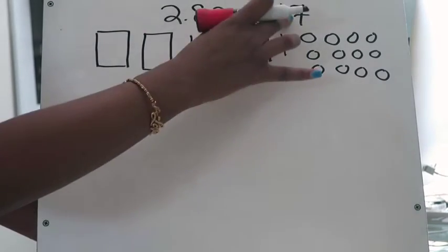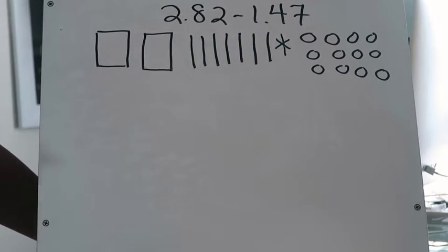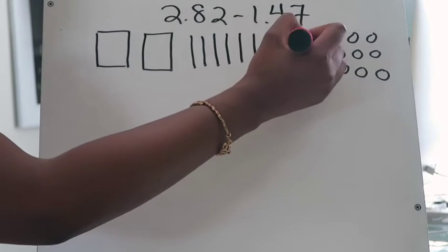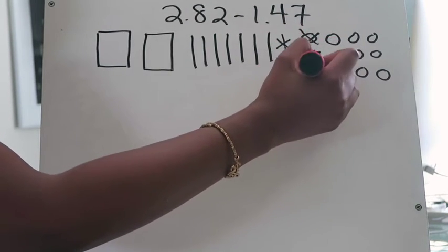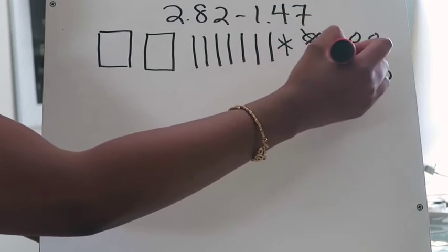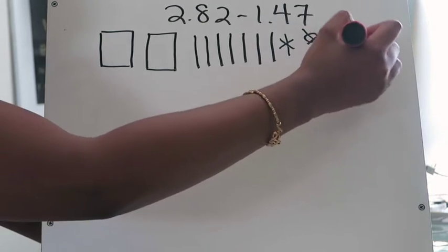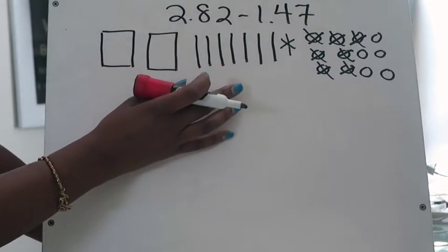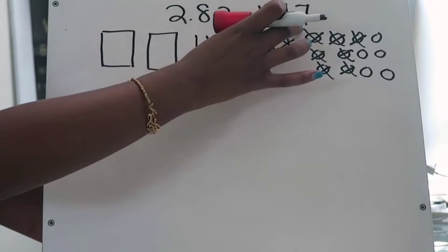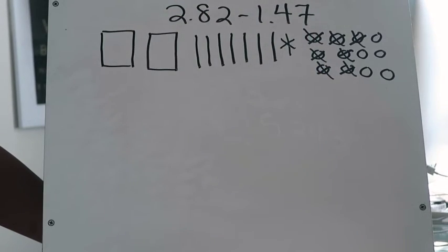Now I can subtract seven hundredths, so I'm going to cross those out — one, two, three, four, five, six, seven. I am now done subtracting the seven hundredths that is in the decimal one and forty-seven hundredths.